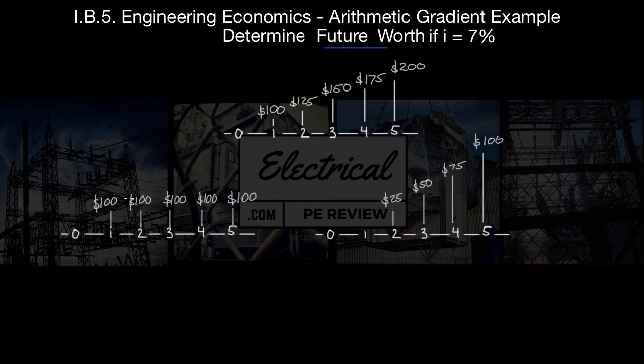The first is a uniform series benefit, where A equals $100.